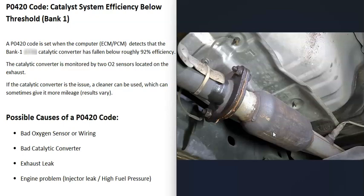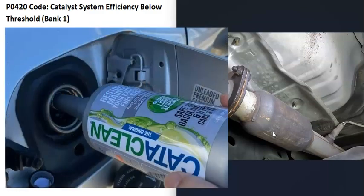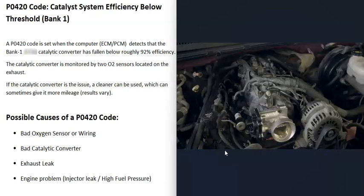If you think you have a catalytic converter problem, you can try a gas additive cleaner. Cataclean is a very popular one — I'll put links in the description. Results can vary: some people have really good results and others don't. If you use Cataclean, take the vehicle on the freeway or highway, because short city hops don't heat up the catalytic converter enough. Also keep in mind a leaky injector can clog the converter and give misleading readings.